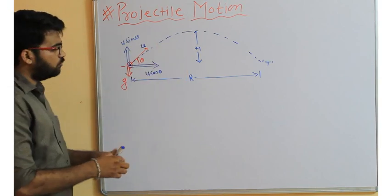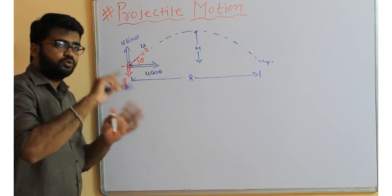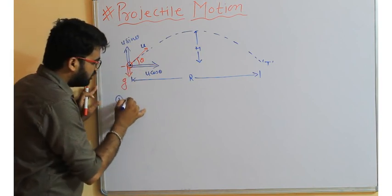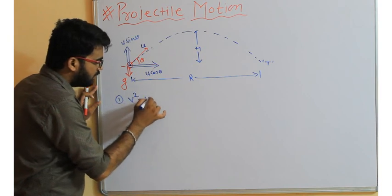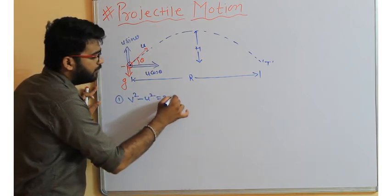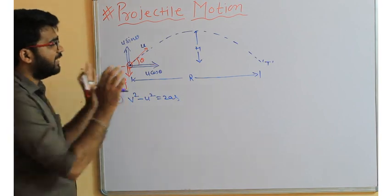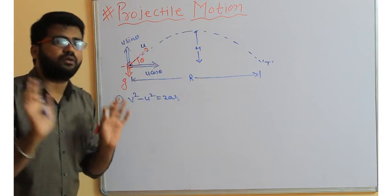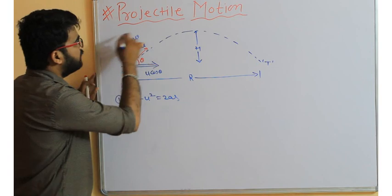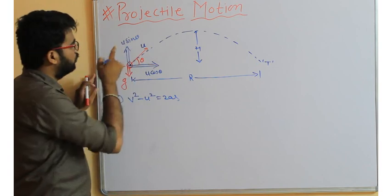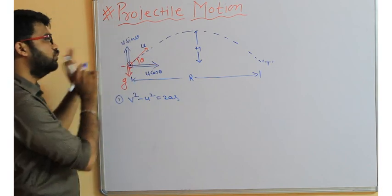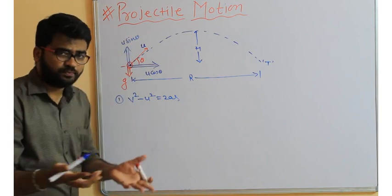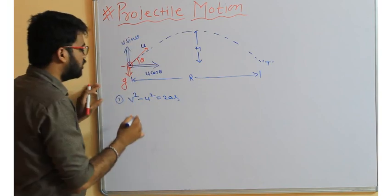For maximum height, we use the formula v² - u² = 2as. Using this kinematic equation, remember that height and time of flight depend only on the vertical component. The vertical component is u sinθ, so always use u sinθ. Now, vertically, when the projectile is at maximum height, the vertical velocity will be zero.